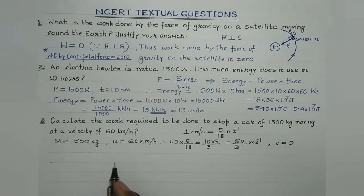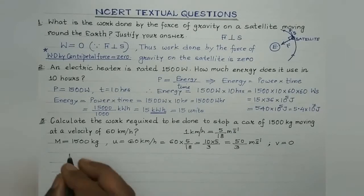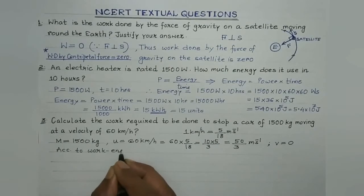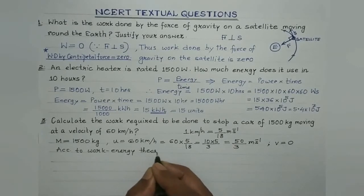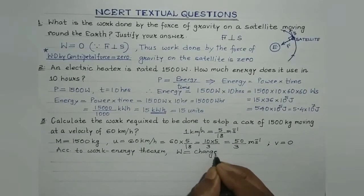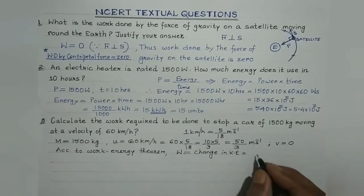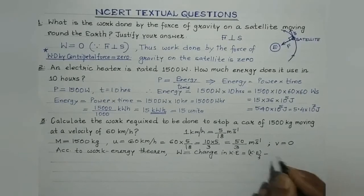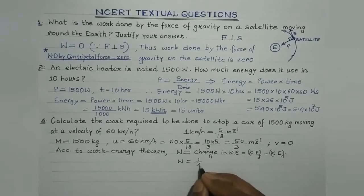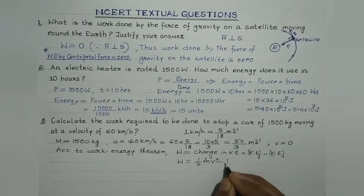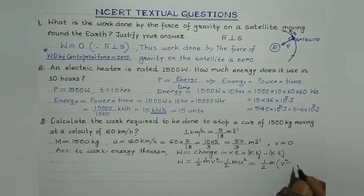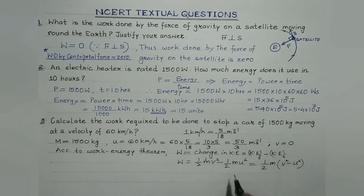The work required equals the change in kinetic energy. According to the work-energy theorem, work done equals change in kinetic energy — that is, final kinetic energy minus initial kinetic energy. Work done equals half mv² minus half mu², or taking half m as common: W = ½m(v² − u²). This is the mathematical form of the work-energy theorem.